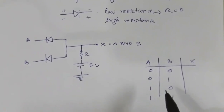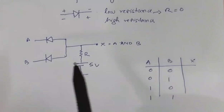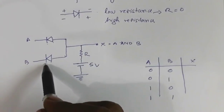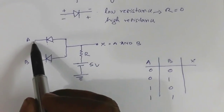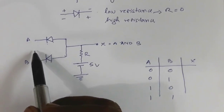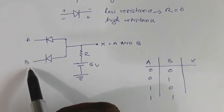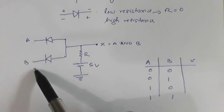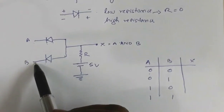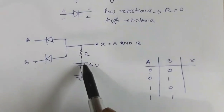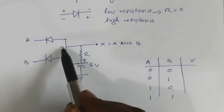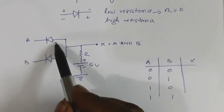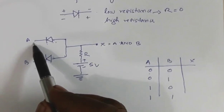Now let us see what happens when both the inputs are low. On the P-type semiconductor on both sides, both diodes are getting high potential from the battery side. From the input side, both A and B are at 0 potential. So the P side is at 0 and the N side is at high potential.